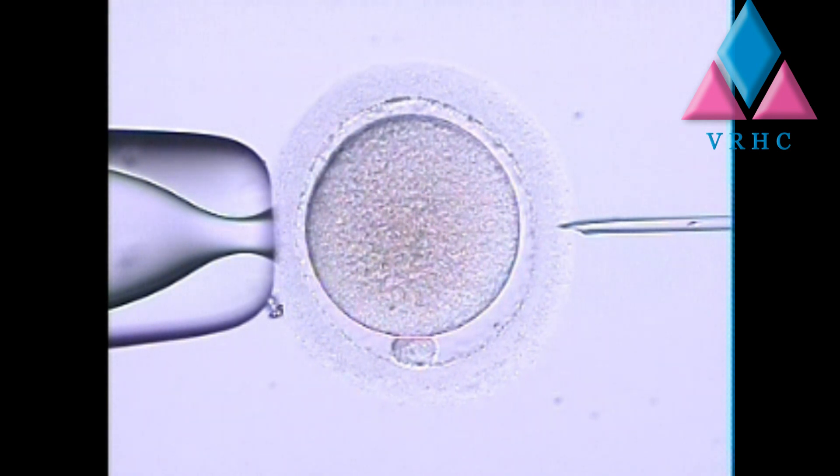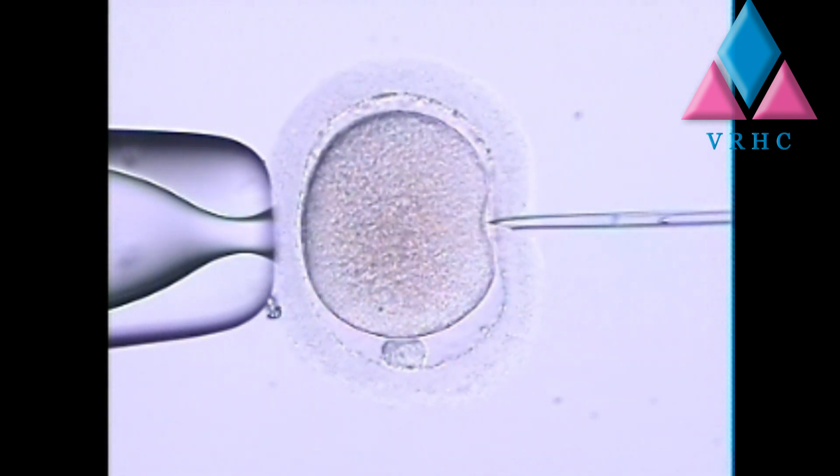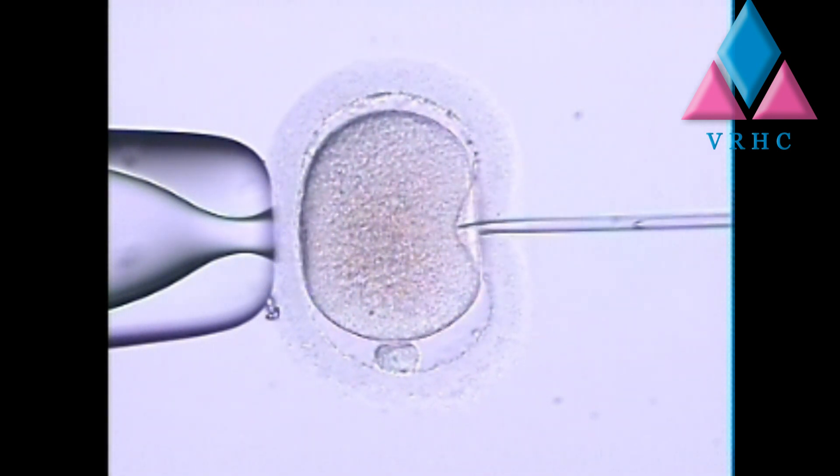In intracytoplasmic sperm injection (ICSI), a good quality sperm is selected by examining its morphology and activity. The selected sperm is first made immotile by striking its tail. It is then aspirated into a very fine glass tube and taken to the oocyte, where it is injected directly into the selected oocyte.